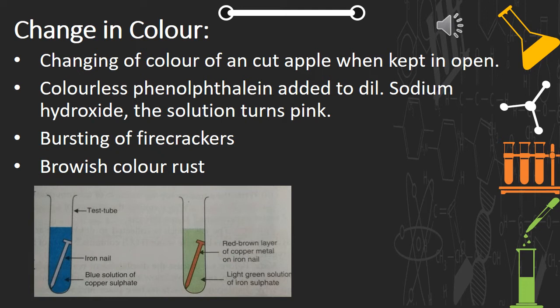When firecrackers burst, we can see lots of colors in the sky due to various chemical reactions, because they contain chemicals like potassium nitrate, potassium chlorate, barium, and sulfur. Lastly, the brownish rust — the iron object gets rusted due to the deposition of a brown color substance. It is a chemical reaction where iron reacts with moisture in the air, so there also you can see the change in color.